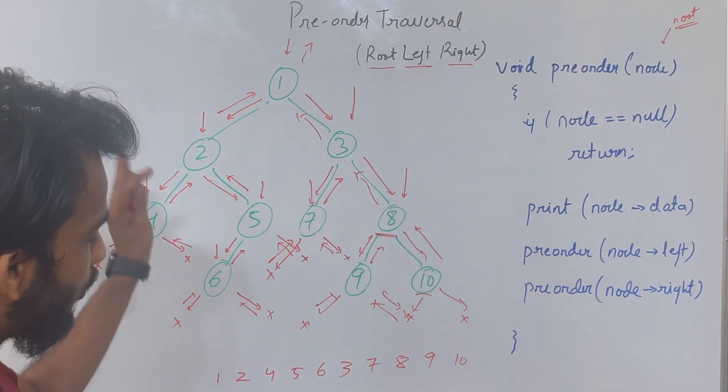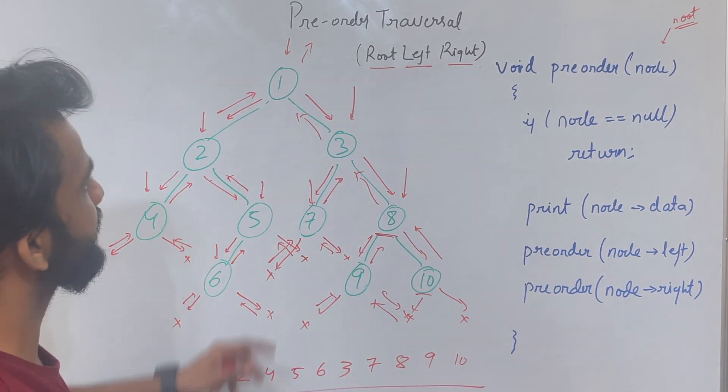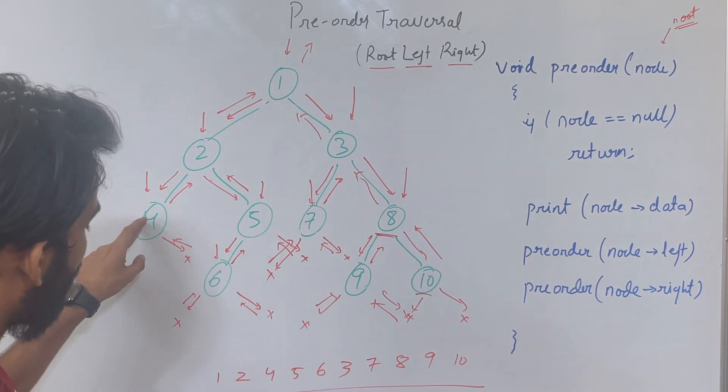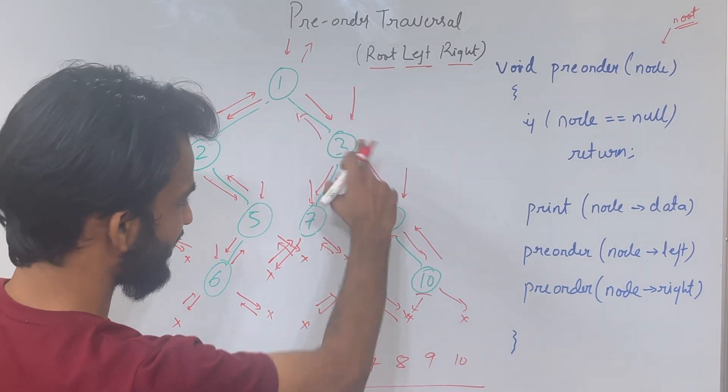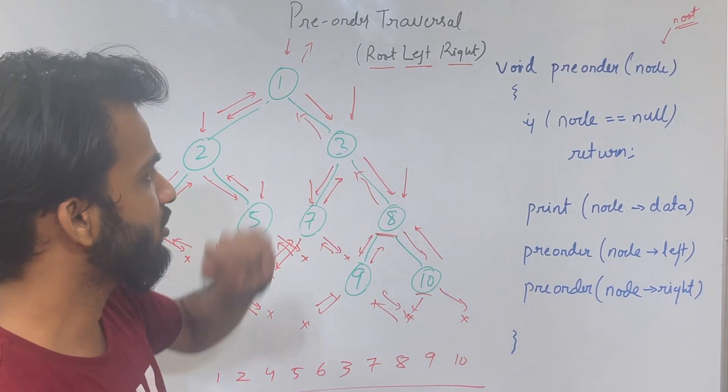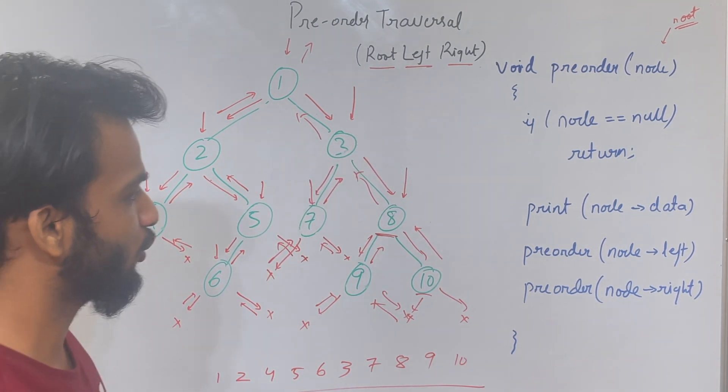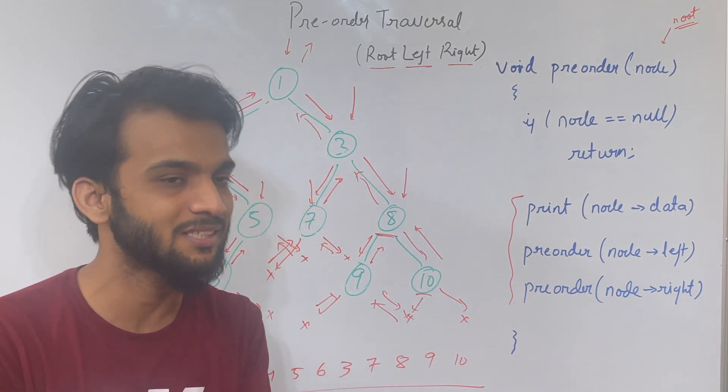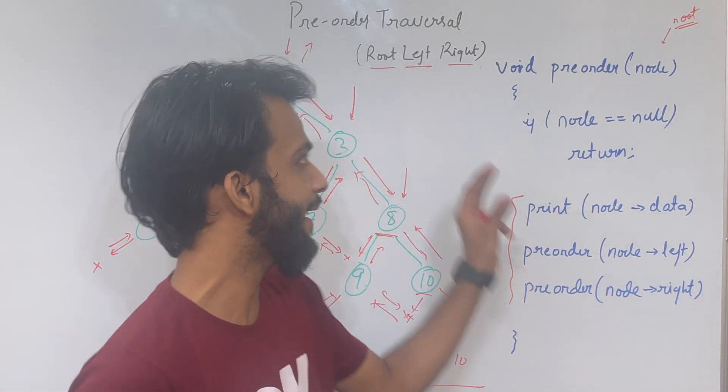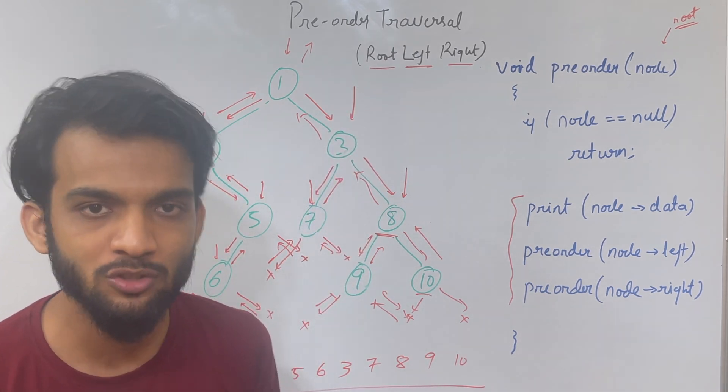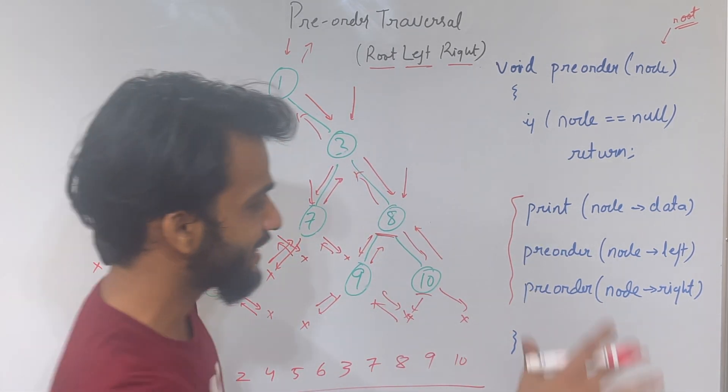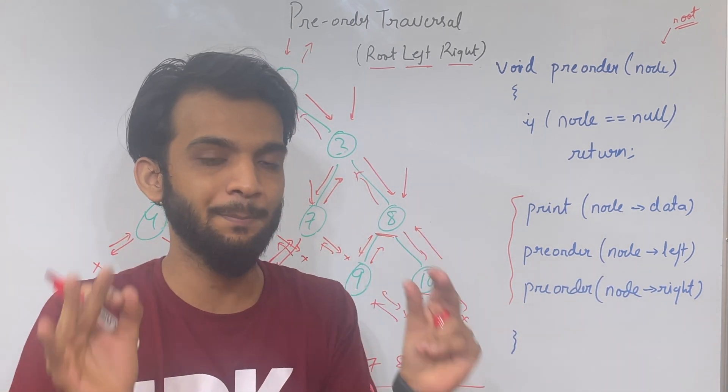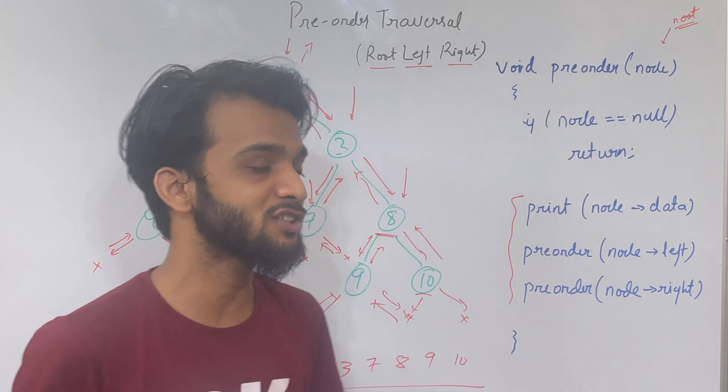That's how you can easily get the pre-order traversal: 1, then the left subtree 2, 4, 5, 6, then right subtree 3, 7, 8, 9, 10. Root, left, right. Basically 3 lines. No need to complicate—keep it simple. Just write whatever you want to write. If you want to first visit root, just write it. If you want to first visit left, write it. Keep it as simple as possible. That is how binary trees are solved.